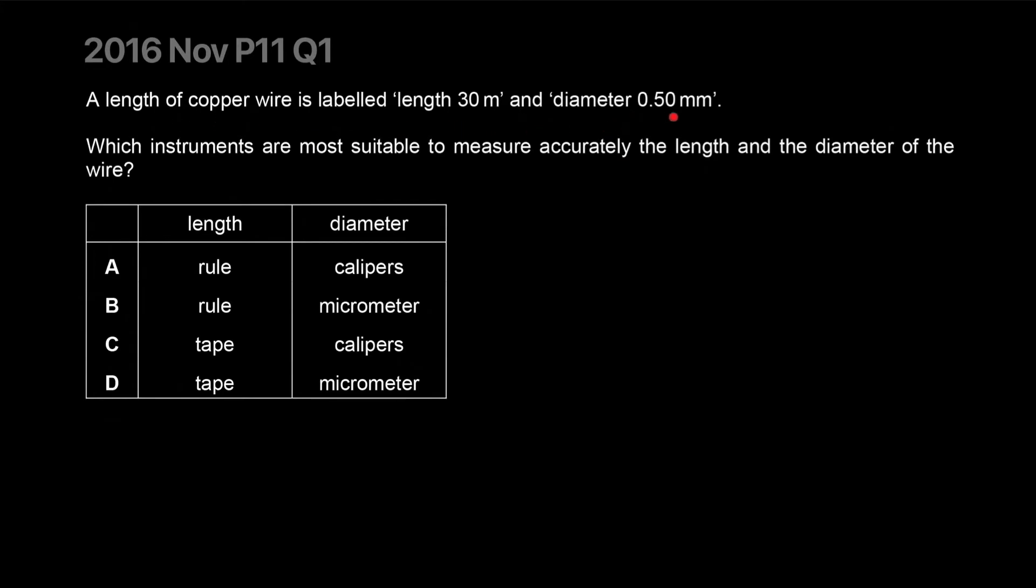A length of copper wire is labeled length 30 meters and diameter 0.5 millimeters. Which instruments are most suitable to measure accurately the length and diameter of the wire? A lot of people got this question wrong because they prefer ruler, thinking 'I have a ruler and I know how to use it. If there was a wire in front of me, I would just use the ruler.'